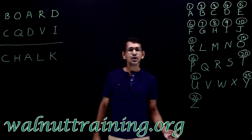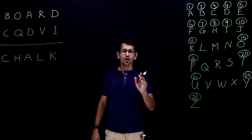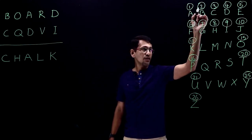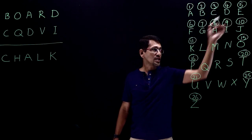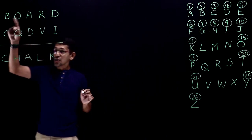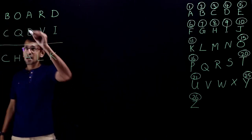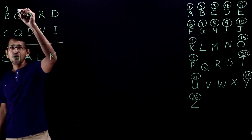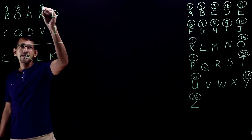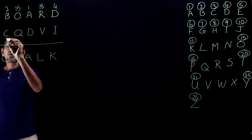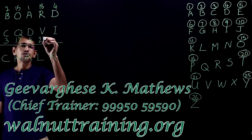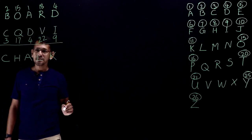I suggest going for the numerical position values of English letters. A is 1, B is 2, C is 3, and so on up to Y is 25 and Z is 26. So the position value of B is 2, O is 15, A is 1, R is 18, D is 4. And for the code: C is 3, Q is 17, D is 4, V is 22, and I is 9.